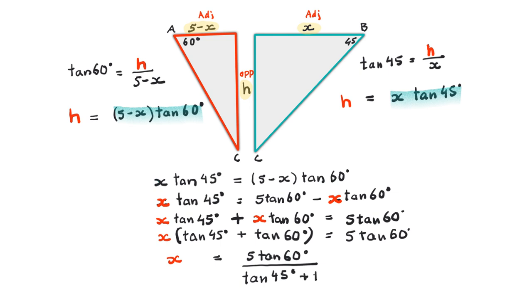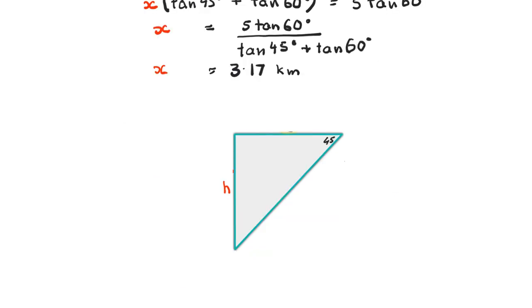Tan 45 is always 1, but at this stage you are allowed to use the calculator. And if you do this, remembering that you want to have the degree signs in, not the radians, you'll find that the X value is equal to 3.17, and we're dealing with kilometers. Let's bring our triangle down here, the green one, and look at it again.